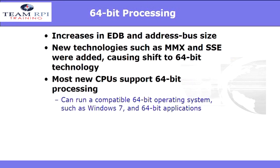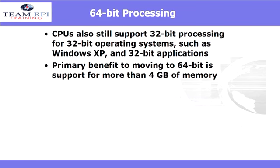With newer and newer computers getting faster and faster, we've entered a world of 64-bit processing. Most new computers support 64-bit processing and can run operating systems and applications compatible with 64-bit processing, like Windows 7. However, it's important to remember that CPUs still support 32-bit processing and older operating systems like Windows XP. The primary benefit of 64-bit processing is support for more than 4 gigs of memory.